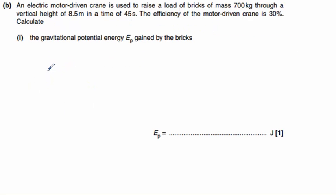Part B introduces us to an electric crane being used to lift some bricks. The bricks have a mass of 700 kilograms, lifted to a vertical height of 8.5 meters in a time of 45 seconds. The efficiency of the motor-driven crane is 30%. The first part asks us to calculate the gravitational potential energy EP gained by the bricks, using the equation EP equals MGH.